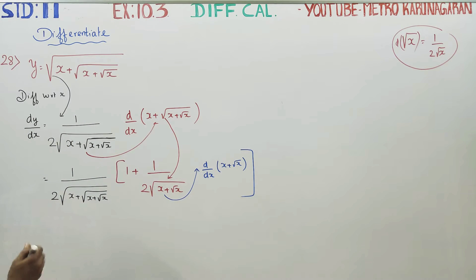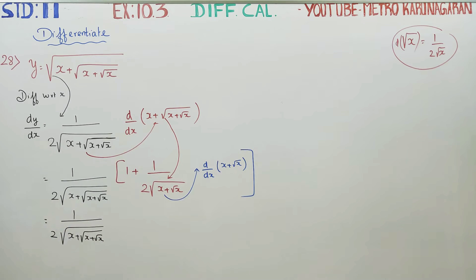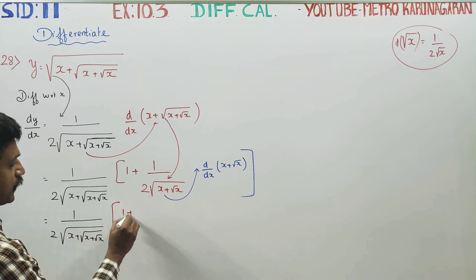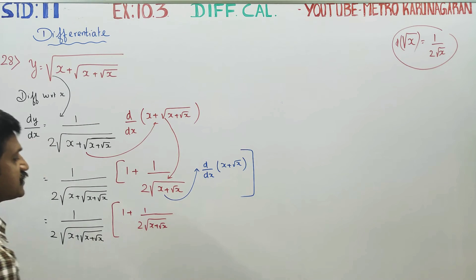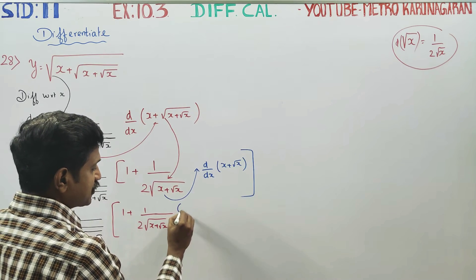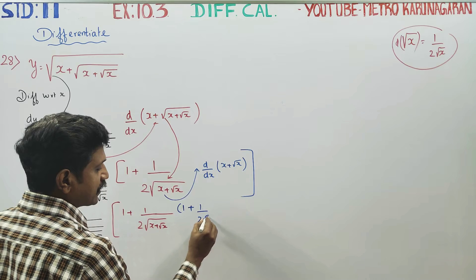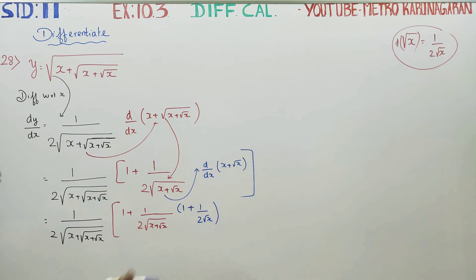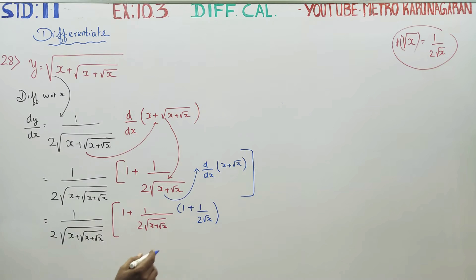First set of differentiation: x plus root x — this is the first set in black. Second set of differentiation: one plus 1 by 2 root of x plus root x — this is the second set in red. Third set of differentiation: x differentiates to 1, root x differentiates to 1 by 2 root x. Chain rule: 1 by 2 root x. Differentiation is over.